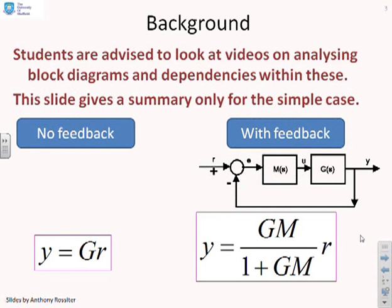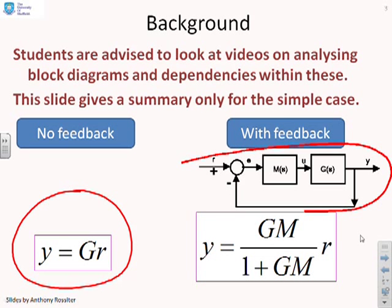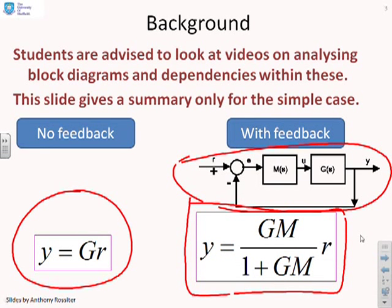Some background just to remind you. We're going to assume that open-loop has a transfer function something like this: Y, the output equals G, the open-loop transfer function, times R, the set point. If you use a simple feedback loop, like this one given here with a compensator M, then the relationship between Y and R now becomes y equals GM over 1 plus GM times R.